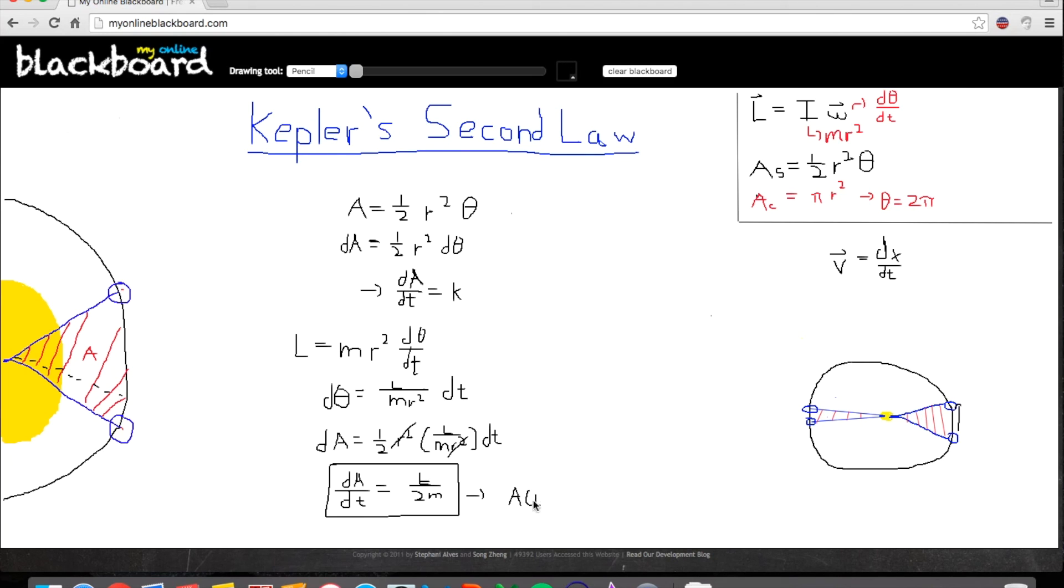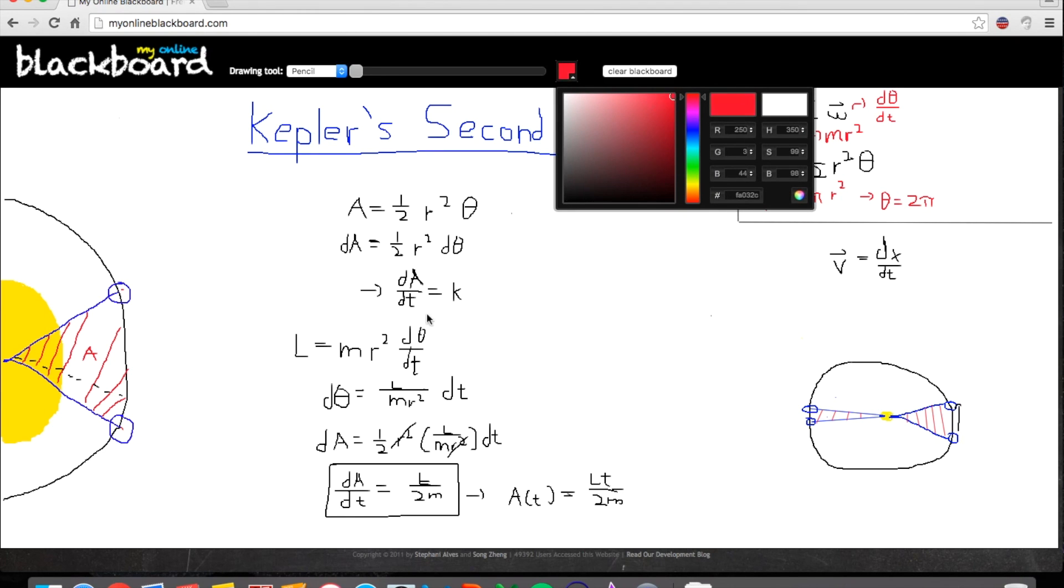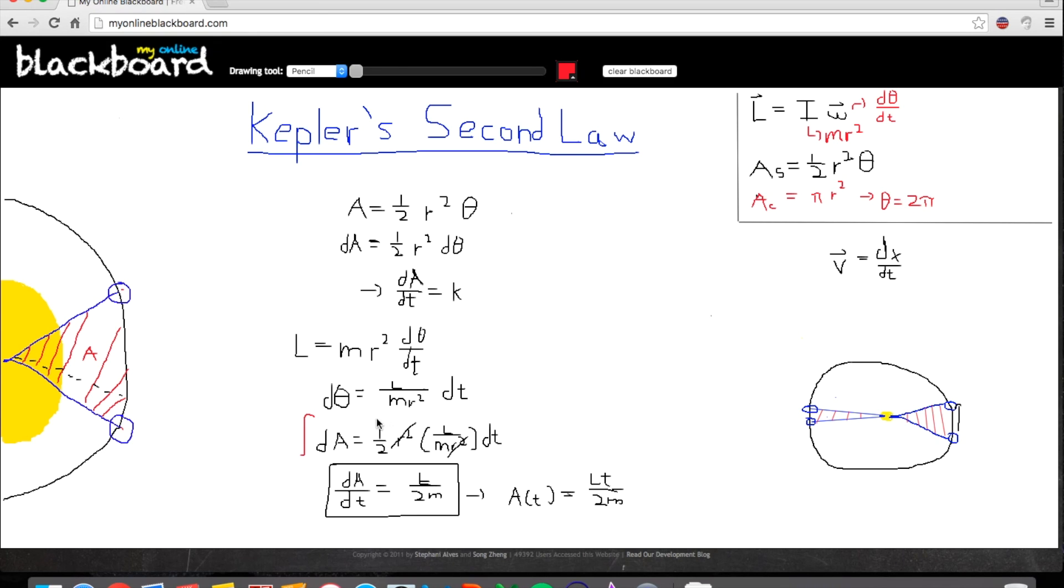We also can get then that the area in terms of time is equal to Lt over 2m. Because, if you think about it, this will be helpful in Kepler's third law, which I'll be covering soon. If we go back to the equation we had before, we could just take the integral of both sides. I'll put it over here. You factor all these constants out. And we're going to do this from 0 to A, and then this will be from 0 to T. And then what you end up with is that all these constants factor out. The integral of dt is just T, and the integral of dA is just A, from 0 to A and 0 to T. And so you'll end up with this. And that's really it. It's the simplest derivation, I think. So, thank you for watching.